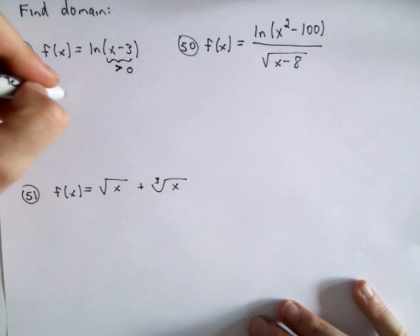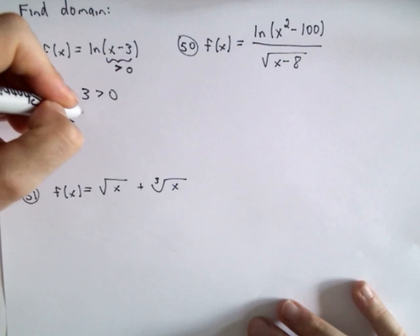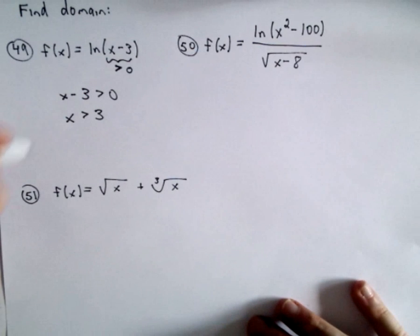So in this case, I'm just going to set up my inequality, x minus three greater than zero. Well, add three to both sides, and we get that x has to be greater than three.